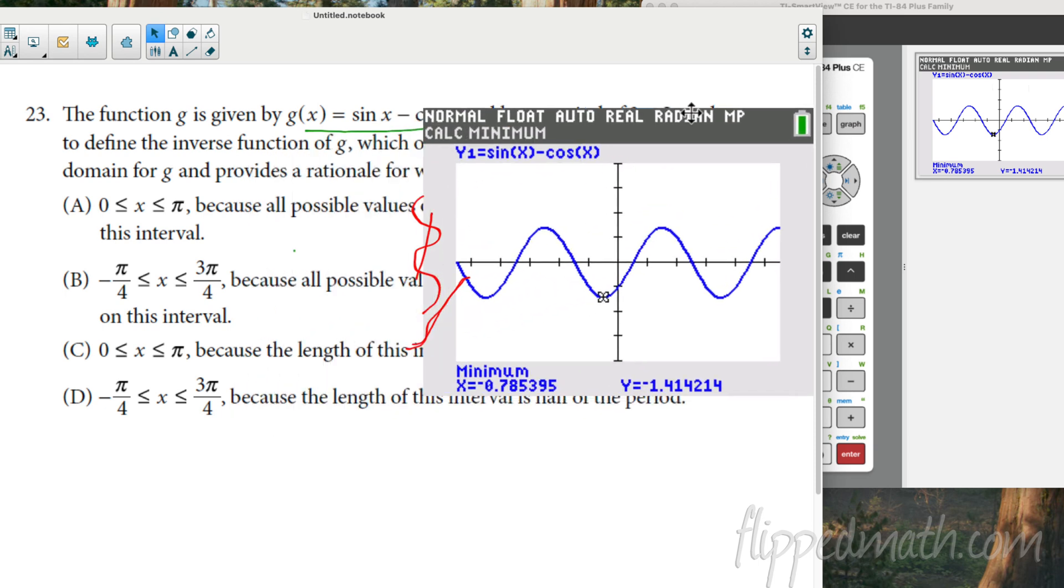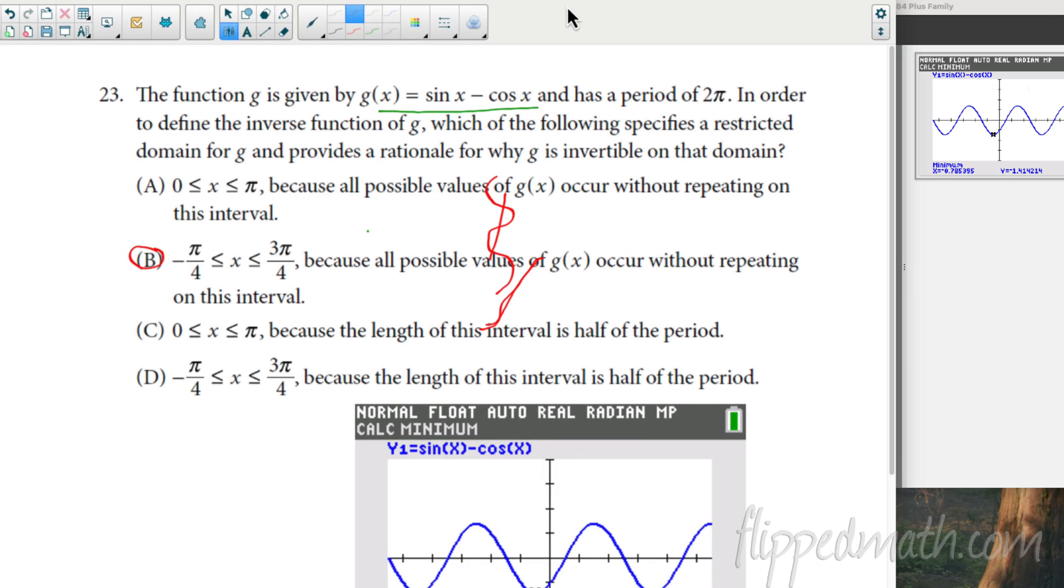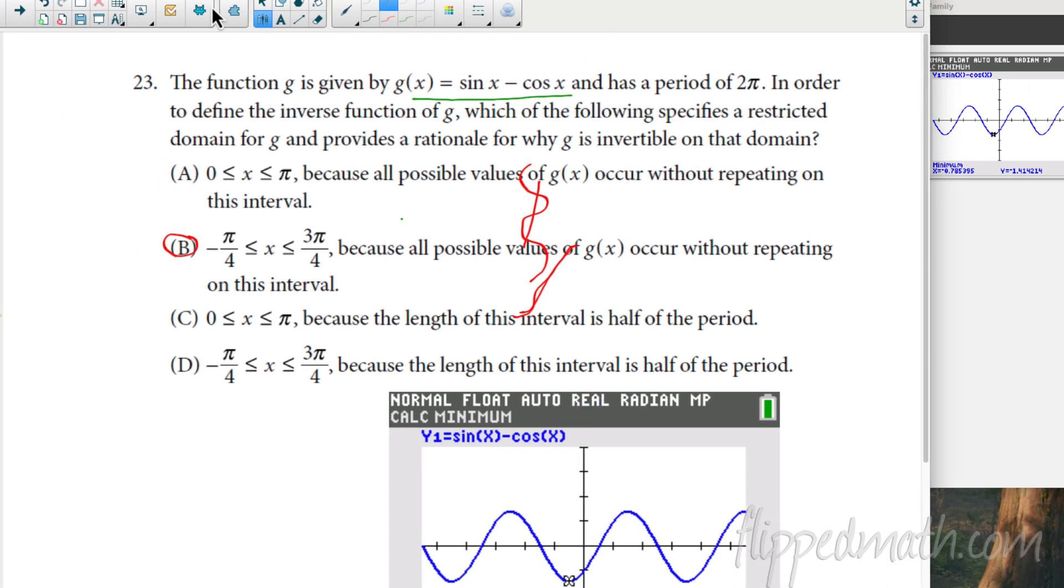So I can narrow down our choices to either B or D and we just have to look at their rationales because all the values of g(x) occur without repeating. That's what we want right there because the length of the interval is half the period. What does that have to do with me? All right. It's choice B. This is the choice for this one. Choice B. There's probably a better way to do it. That's more technical, but sometimes I guess, yeah, maybe that'll work for you while you're taking your test.